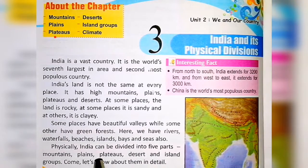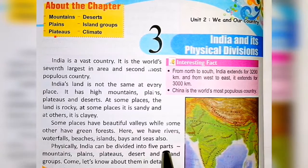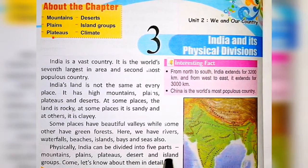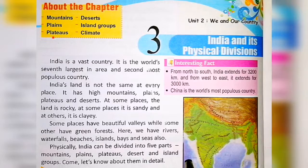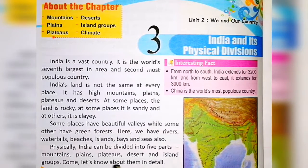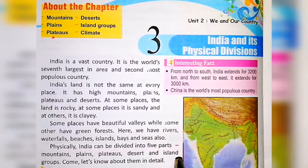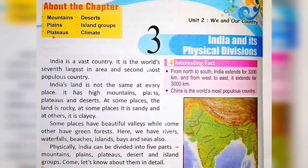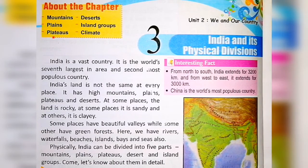Physically, India can be divided into five parts: Mountain, Plain, Plateau, Desert, and Island Groups. Come, let us know about them in detail.